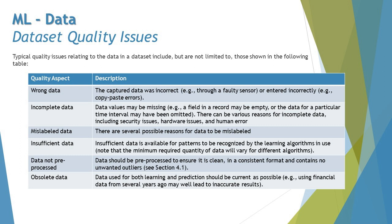Obsolete data — data used for both learning and prediction should be as current as possible, because outdated data could produce outdated results. Something latest and recent is the most valuable data you can have to train your model. For example, using financial data from several years ago may well lead to inaccurate results.